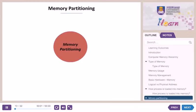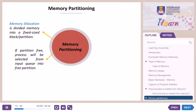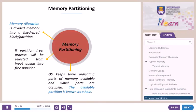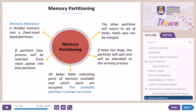Memory partitioning. Memory allocation divides memory into fixed-sized blocks or partitions. If a partition is free, a process will be selected from the input queue and placed into the free partition. The OS keeps a table indicating which parts of memory are available and which are occupied. The available partition is known as a hole. If holes are too large, the partition will be split and allocated to the arriving process. The other partition will return to the set of holes. Holes can also be merged.